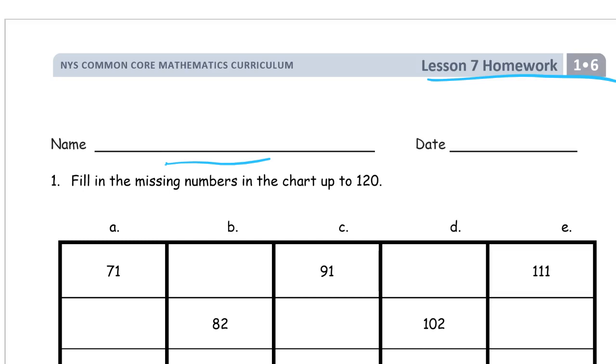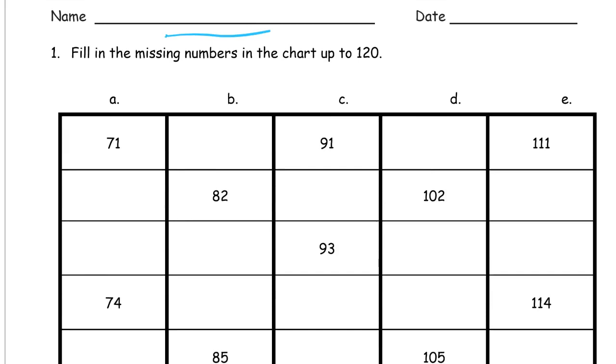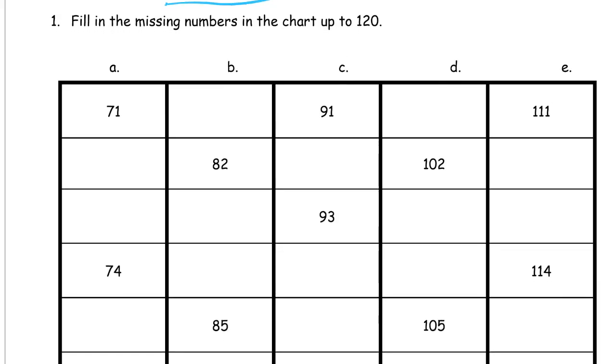And we're filling in the missing numbers in the chart up to 120. There's a lot of different names for this kind of problem set. You can think of it as a broken number chart. Except that this isn't the regular 100 grid that's a 10 by 10 grid. It goes to 120.